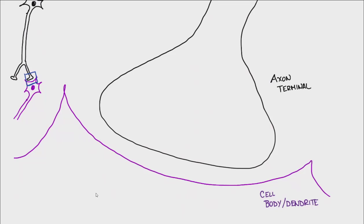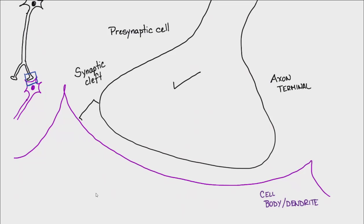We describe the two cells as follows: the cell that is giving the signal is called the presynaptic cell. The space in between them is called the synaptic cleft, and the receiving cell is called the postsynaptic cell. The flow of information goes in that direction.